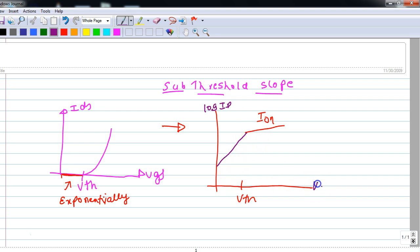If you notice, even though the gate voltage is zero here, we have some constant current. That is called as the off current of the MOSFET.